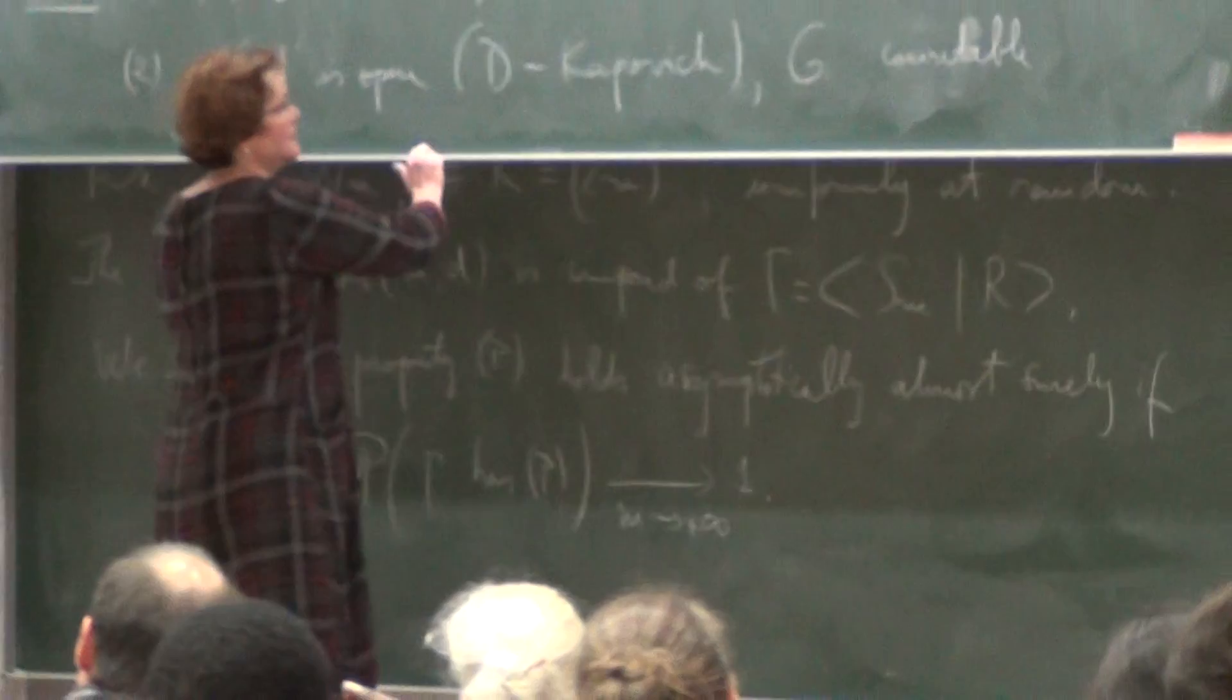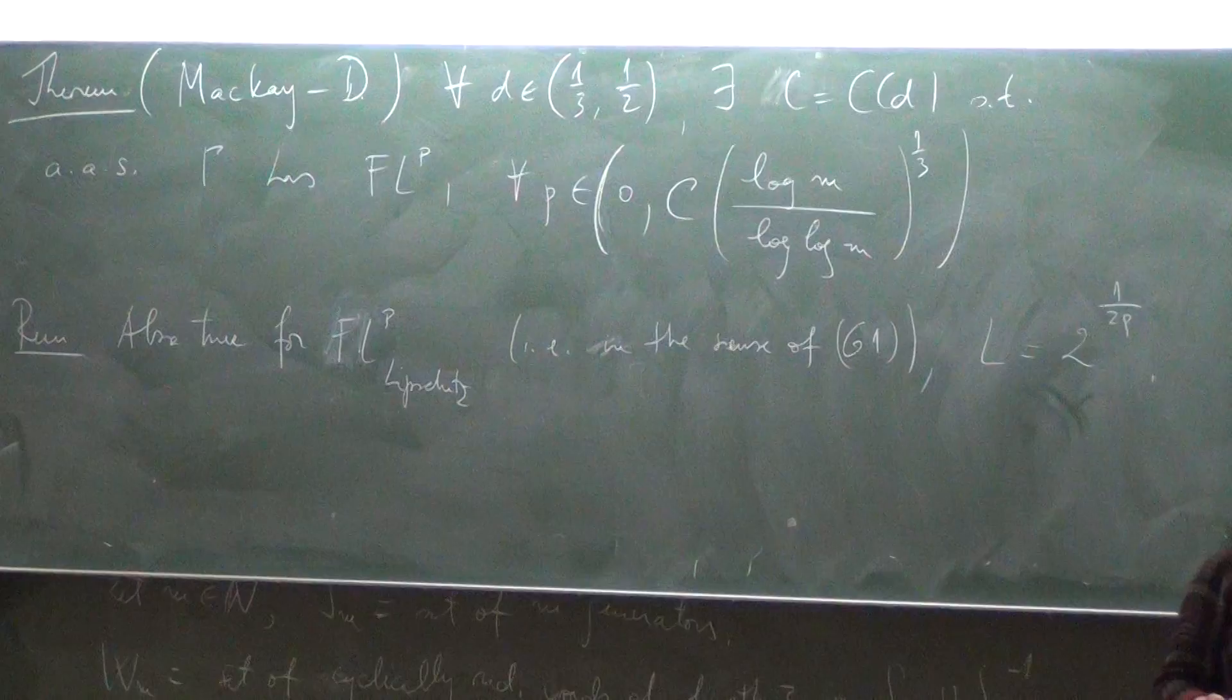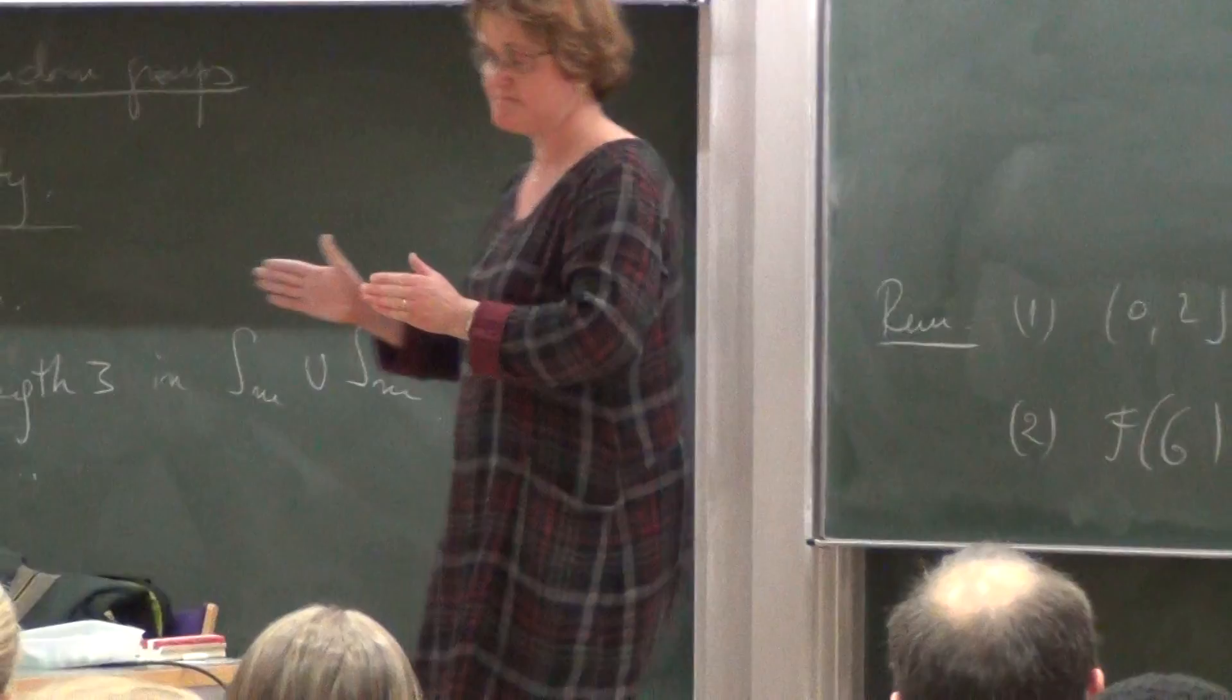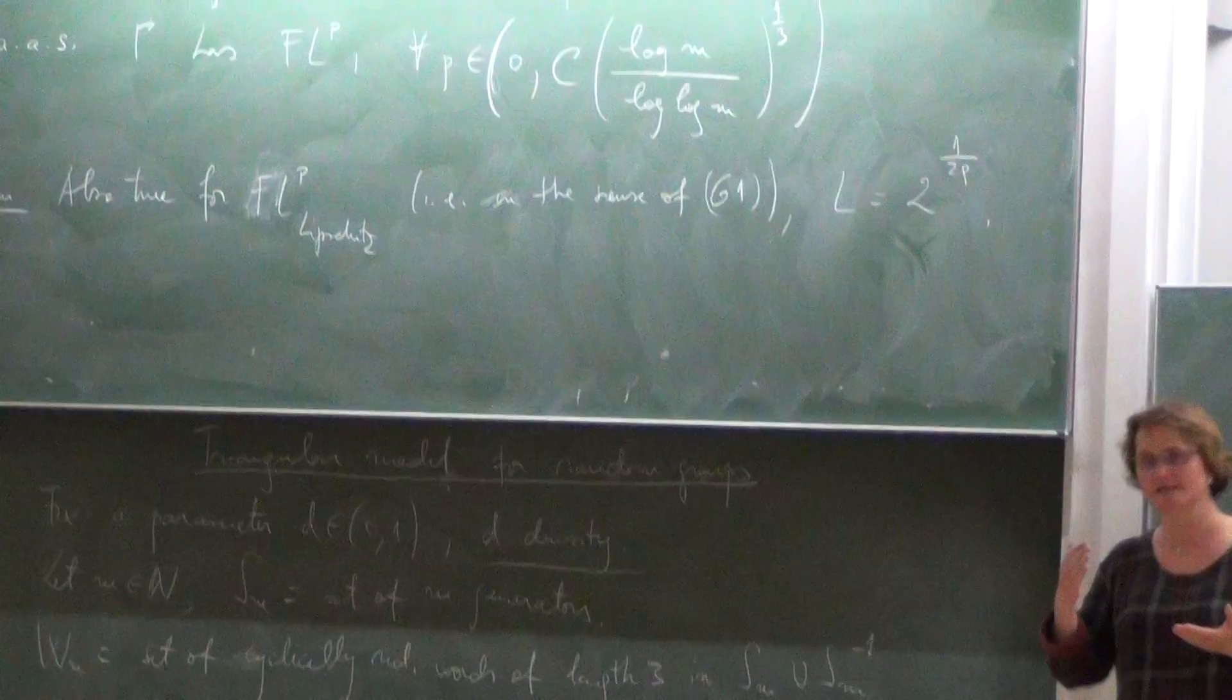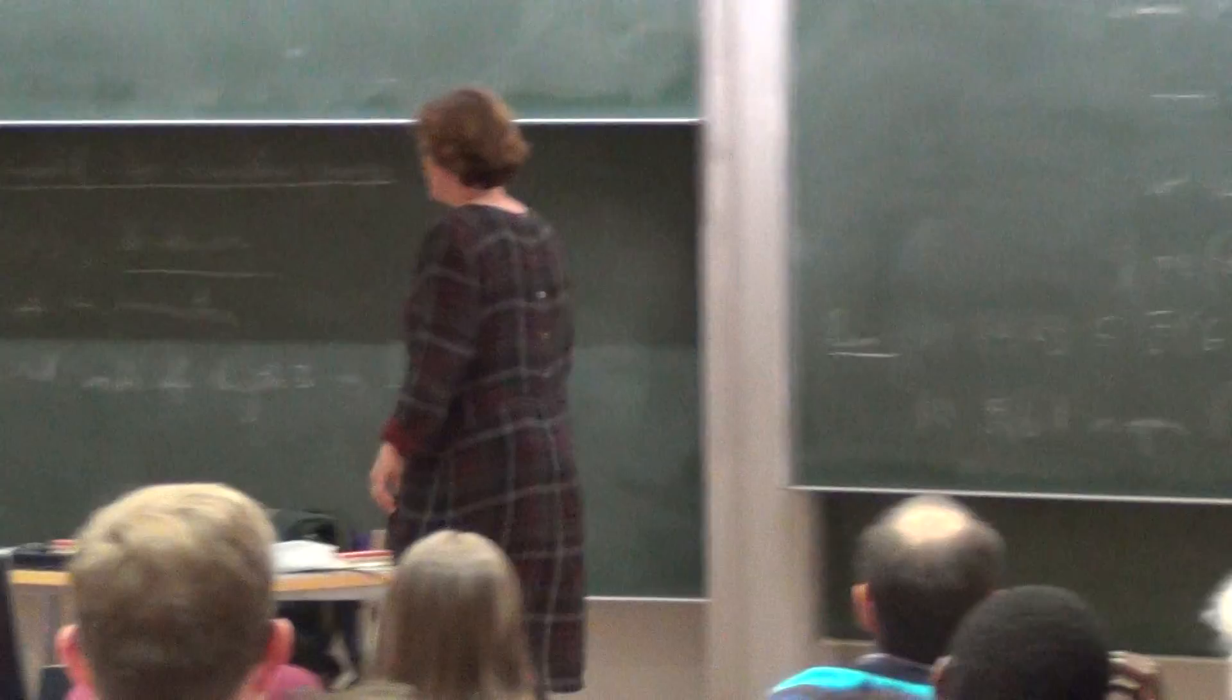So here is what we proved. The first theorem, which is proved by myself. Is that for every density between, well, essentially between a third and a half, that's the thing we want really. So there is a constant depending on the density such that asymptotically almost surely gamma has the property F_p for all the p between zero and, well, the upper bound increases. And increases at this speed, log of M divided by log log M power of P. Oh, and there is a constant. So the larger the number of generators, the larger the range of F_p. So they get more and more fixed-point properties for more and more empty spaces.